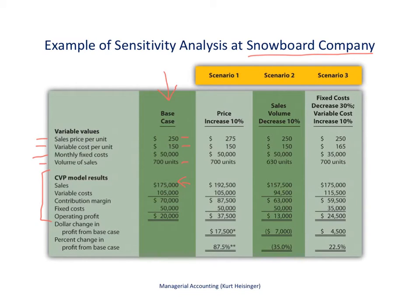Multiplying $150 by 700 units gives us total variable cost of $105,000. The difference between total revenue and total variable cost is our contribution margin. Subtracting our expected fixed costs, we think our operating profit will be about $20,000 — that's our best estimate related to this snowboard we are planning to sell.